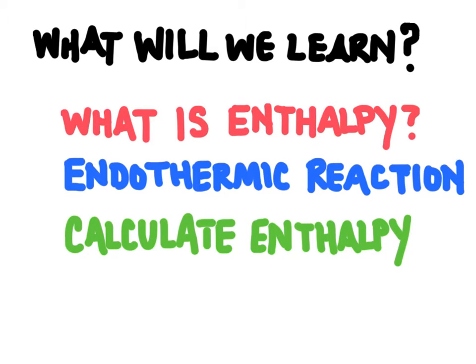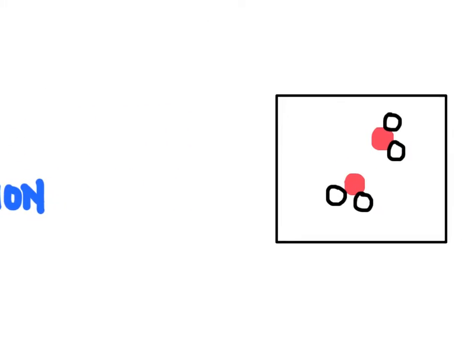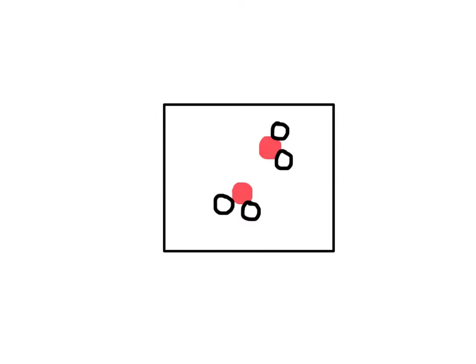We call that an endothermic reaction. And then finally we're going to determine the enthalpy change during a chemical reaction. We've already determined that energy is transferred between the system and the surroundings during a chemical reaction, and energy is either going to go out of the system or it's going to come into the system from the surroundings.